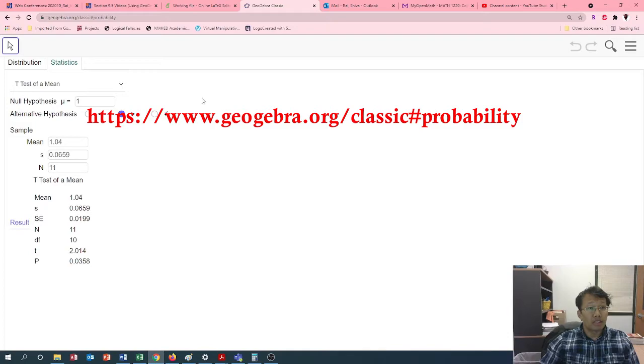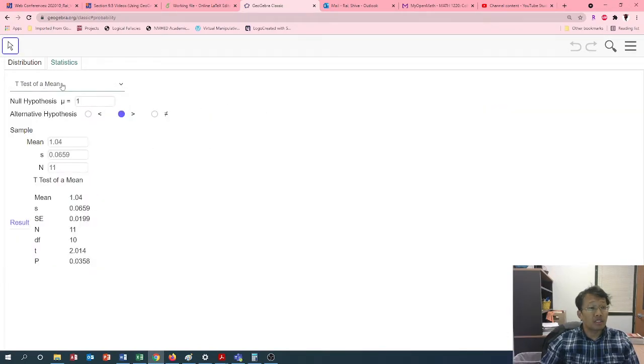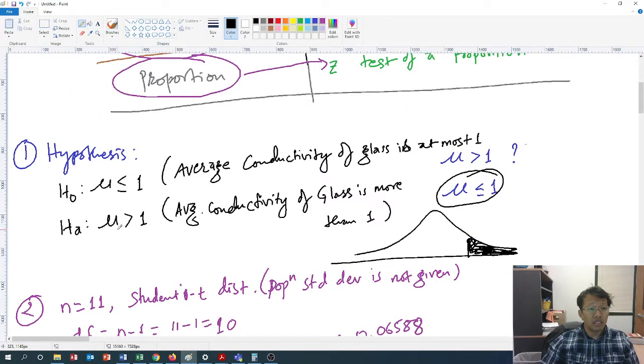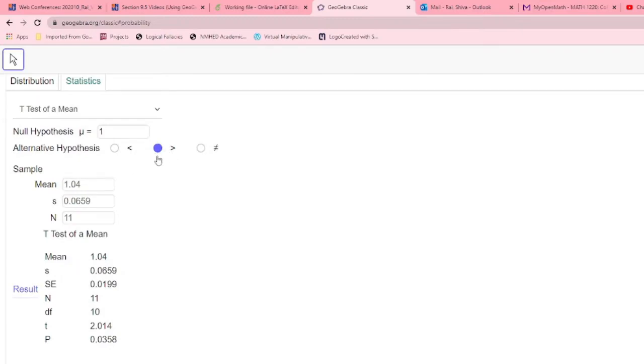So here we would like to go to this website and go for t-test of a mean, since we are using student's t-distribution. Null hypothesis is one, okay, it correlates with that one. And greater than one is the alternative hypothesis, so that's fine. Mean is 1.04, sample standard deviation is 0.06588, let us write that down. Okay, and n equals to 11. So this is t-test of a mean. Standard error is 0.0199, degrees of freedom is 10, the t-test statistic is 2.0137, the p-value is 0.0359.